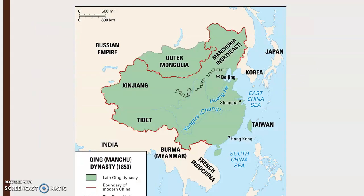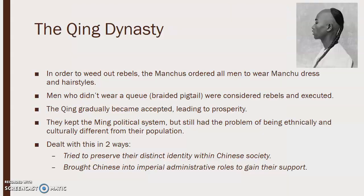The Manchus would come in and defeat Li Zicheng's armies and establish the Qing dynasty in 1644. The Qing dynasty was a bit bigger than the Ming dynasty. In order to weed out the rebels, the Manchus ordered all men to wear Manchu dress and hairstyles, including what's called the queue, which is just a braided pigtail. If you didn't have that, you were considered a rebel and generally killed. The Qing would gradually become accepted, keeping the Ming political system, but still dealing with being ethnically and culturally different from their population. They tried to preserve their distinct identity within Chinese society while bringing Chinese people into imperial administrative roles to gain their support.